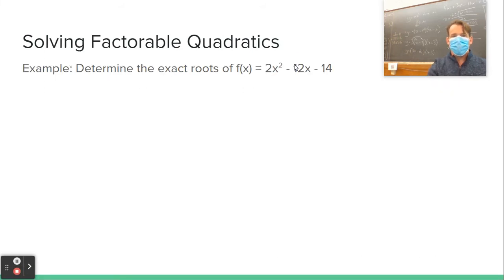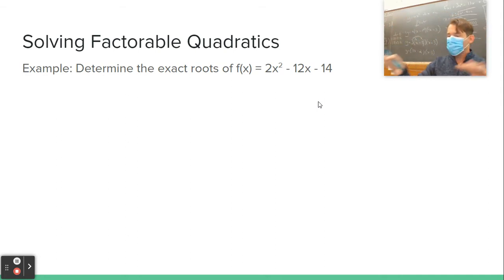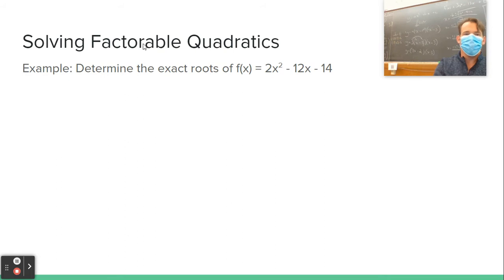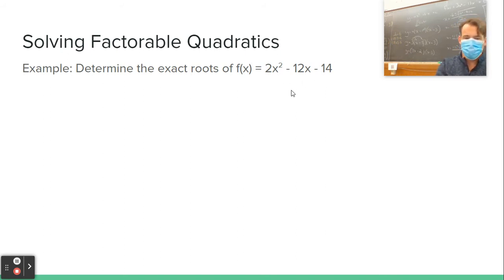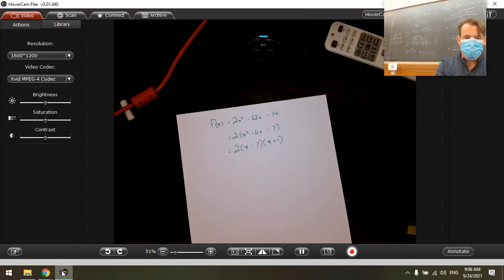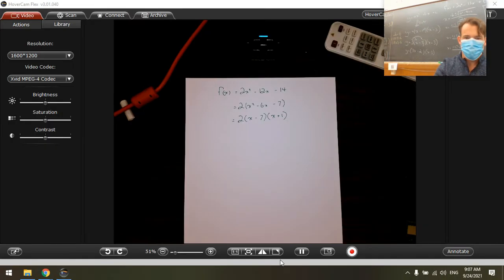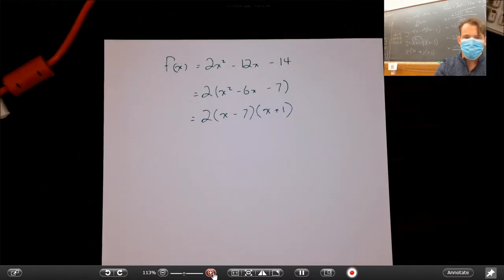Let's determine the exact roots of f(x) equals 2x² minus 12x minus 14. Go ahead and take some time to work this out, then compare with my solution. We've been asked to find exact roots — we can use the quadratic formula or factoring. This is a factorable one, so factoring will be faster, though quadratic formula will get you there too.